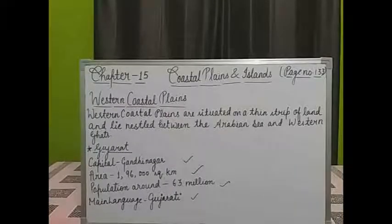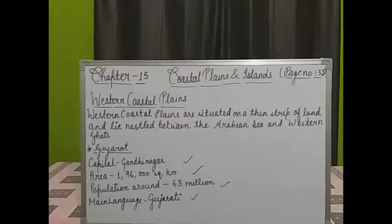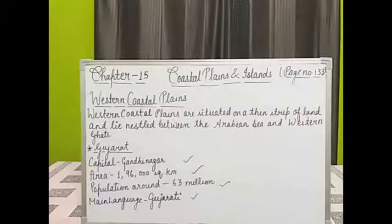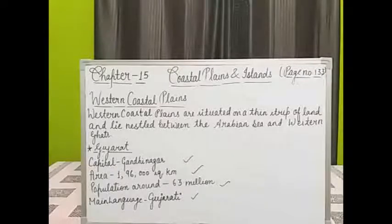Western coastal plains are situated on a thin strip of land, nestled between the Arabian Sea and the Western Ghats. As I have shown you in the map, they extend from the state of Gujarat up to the southern state of Kerala.